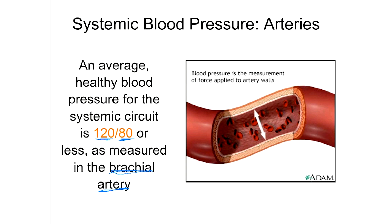If you took blood pressure in an artery further from the heart, like the radial artery at the wrist, a normal healthy pressure would be less than 120 over 80. If it were still 120 over 80 at the radial artery, that would be too high. Conversely, in an artery closer to the heart, a higher pressure than 120 over 80 would be expected.